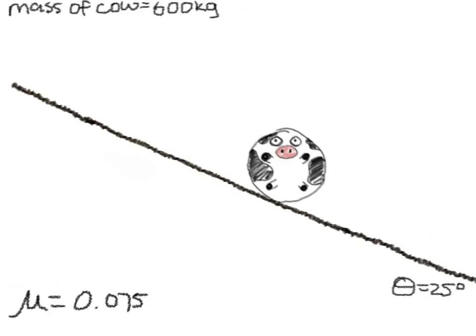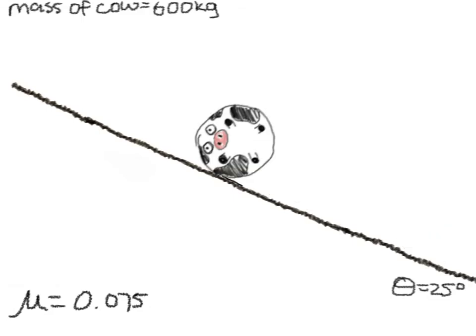Okay, rewind. We have the mass of the cow, the coefficient of friction, and the angle of the slope. How do we get the acceleration from that?